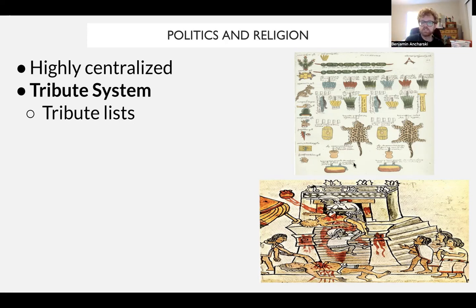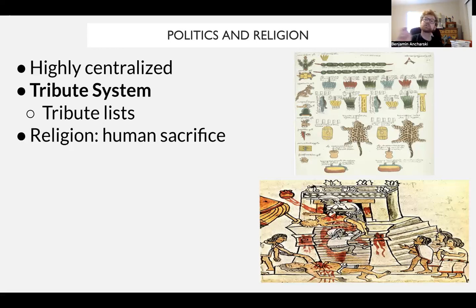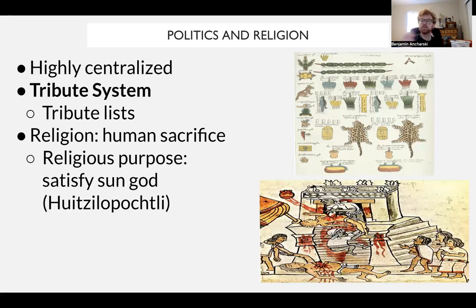The Aztec had tribute lists — pictorial representations of what they demanded from conquered people, including jaguar furs, animal furs, precious metals like gold, food, slaves, and natural resources like stone. The Aztec also maintain power through human sacrifice, which serves two roles: religiously, to satisfy the sun god; and politically, it is a dramatic demonstration of power for everyone.